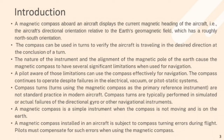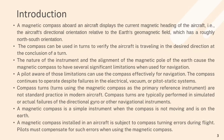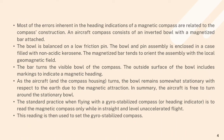Compass turns are typically performed in simulated or actual failures of directional gyro and other navigational instruments. A magnetic compass is a simple instrument when the compass is not moving and is on the Earth. A magnetic compass installed in an aircraft is subjected to compass turning errors during flight. Pilots must compensate for such errors when using the magnetic compass. Most of the errors inherent in the heading indications of a magnetic compass are related to the compass's construction.